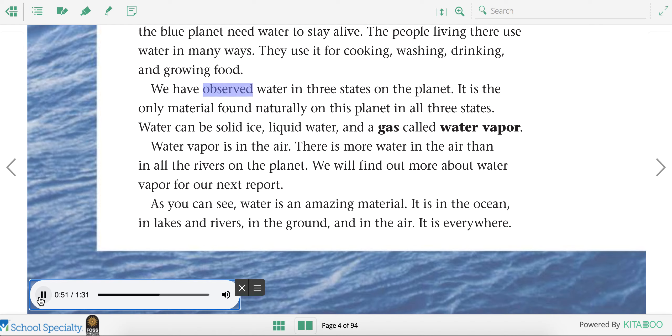We have observed water in three states on the planet. It is the only material found naturally on this planet in all three states. Water can be solid ice, liquid water, and a gas called water vapor. Water vapor is in the air. There is more water in the air than in all the rivers on the planet. We will find out more about water vapor for our next report.